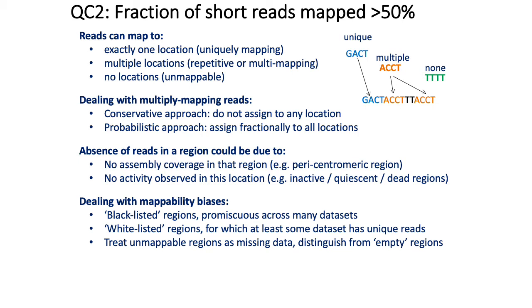Similarly, there are whitelisted regions, which are regions that have very unique sequence where any read that maps there is probably real, and so those reads are always kept.